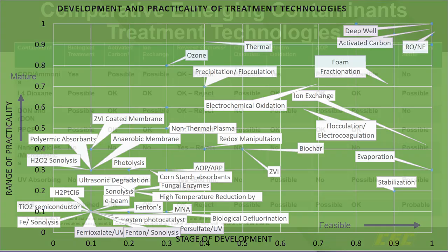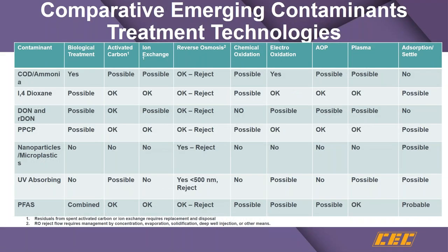Looking at what contaminants are typically seen in landfill leachate and which technologies are appropriate, biological treatment is being investigated but is typically not capable of removing PFAS, compared to activated carbon, ion exchange, reverse osmosis, chemical oxidation, electro oxidation, advanced oxidation processes, plasma, or absorptive technologies. We generalized what technologies would be appropriate for which constituents.